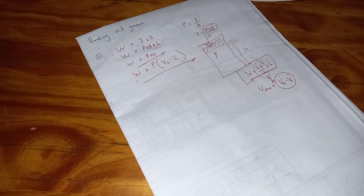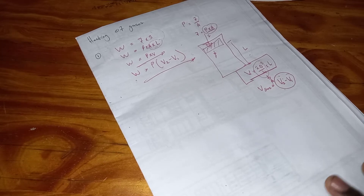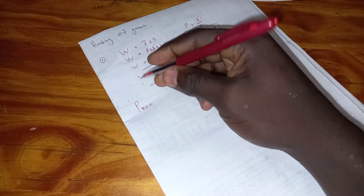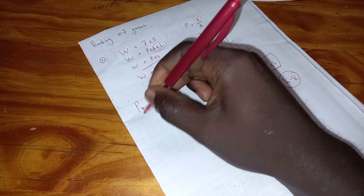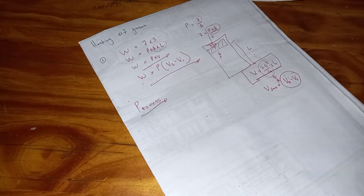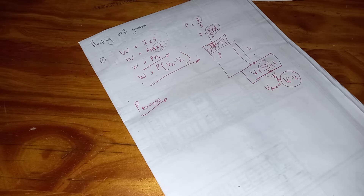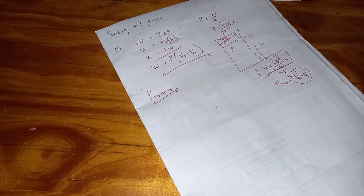This is the formula we are going to use in the process of heating of gas — the formula for work done. Now let's go to our processes. A process is when a subject changes by means of operation, or when a subject is undergoing change step by step. When heating a gas, we look at certain processes.